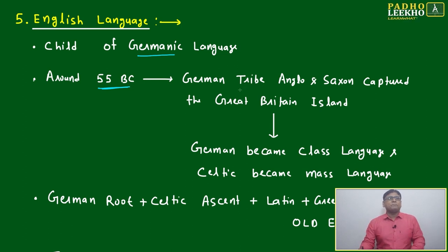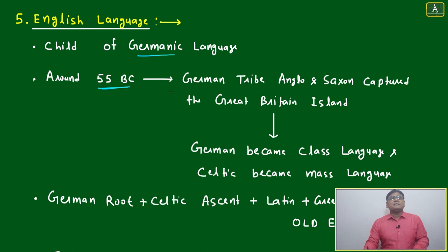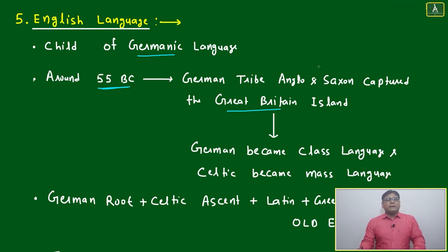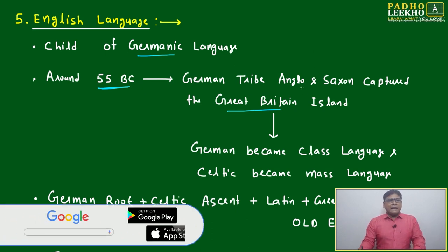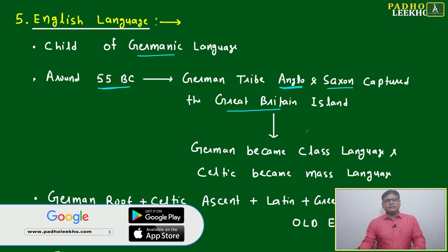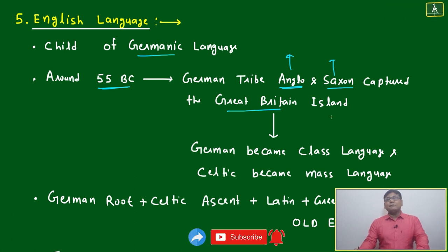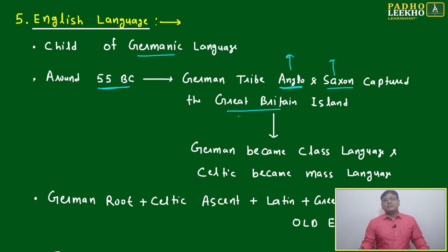The Germanic people were trying to dominate all of Europe, and around 55 BC they attacked the Great Britain island — what we call the United Kingdom, Great Britain, or England. Geographically, it was the Great Britain island, a group of multiple islands. Two tribes were mainly there: Anglo and Saxon. Anglo was very developed brain-wise, Saxon was very developed physically, and their combination could do wonders. Due to this, Germanic people dominated all over Europe and Germanic became the class language.